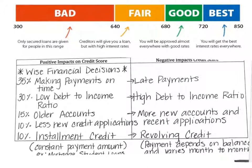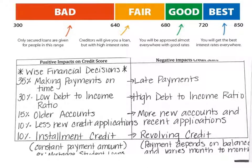Negative impacts on credit score include late payments — that is the worst and will knock your score down. A high debt-to-income ratio means you owe a lot but don't make a lot, so lenders aren't sure you'll pay on time. Opening too many new accounts — like going to every store in the mall and opening a credit card — is also bad. And revolving credit where the payment depends on balance and varies month to month will hurt your score.